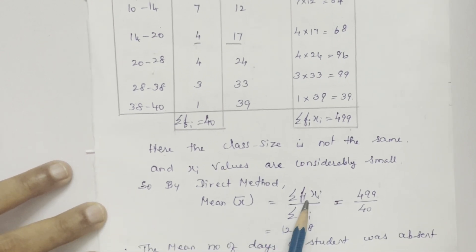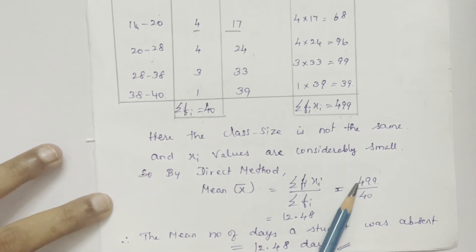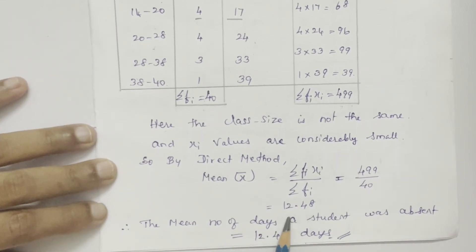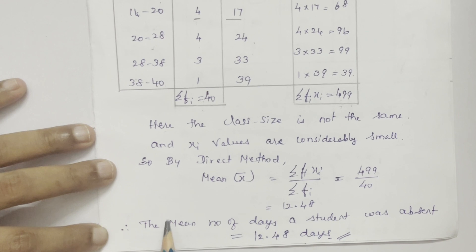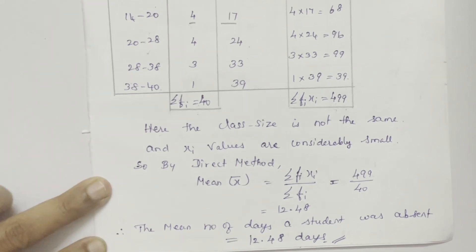Mean is equal to sigma fi xi by sigma fi, and I have substituted these values and found the final answer. So the mean number of days a student was absent is 12.48 days. Hope you understand. Thanks for watching.